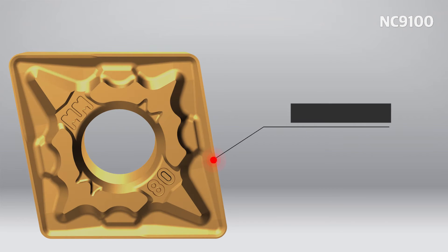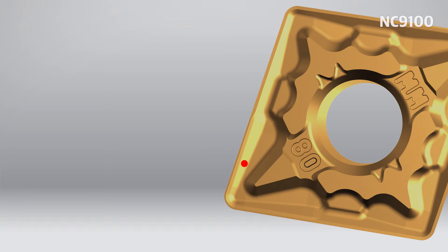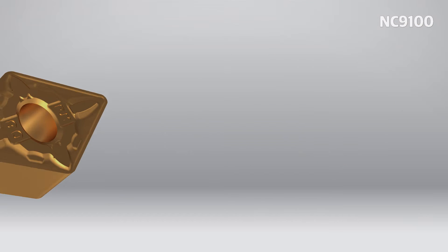The MM chip breaker with its dual inclined land design ensures a stable lifespan and minimizes built-up edge formation. Moreover, it provides a wide chip pocket to prevent plastic deformation and excessive wearing of minor cutting edges.